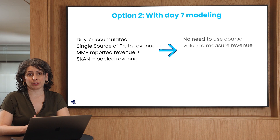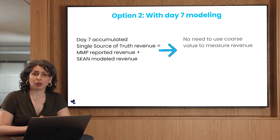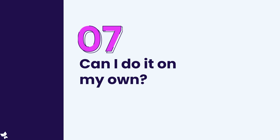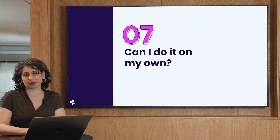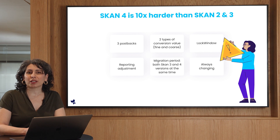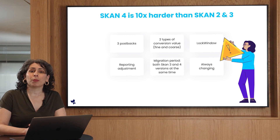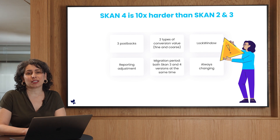If you decide to measure revenue in the 2nd window, you can still enrich your performance reports with the additional data from SKAN. We recommend going with this option, as you won't need to use coarse-grained values to measure revenue. The last and most important question is: can you do it yourself? In short, it's probably best not to. Although doing it on your own was possible for SKAN 2 and 3, doing it alone in SKAN 4.0 is 10 times harder. We recommend working with a mobile measurement partner to help build your conversion value schemas, migrate to the new version without losing any data, and help you overcome the limitations that still exist today.